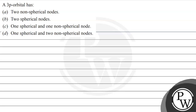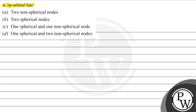Let's read this question. A 3P orbital has: option A says 2 non-spherical nodes, option B says 2 spherical nodes, option C says 1 spherical and 1 non-spherical node, and option D says 1 spherical and 2 non-spherical nodes.